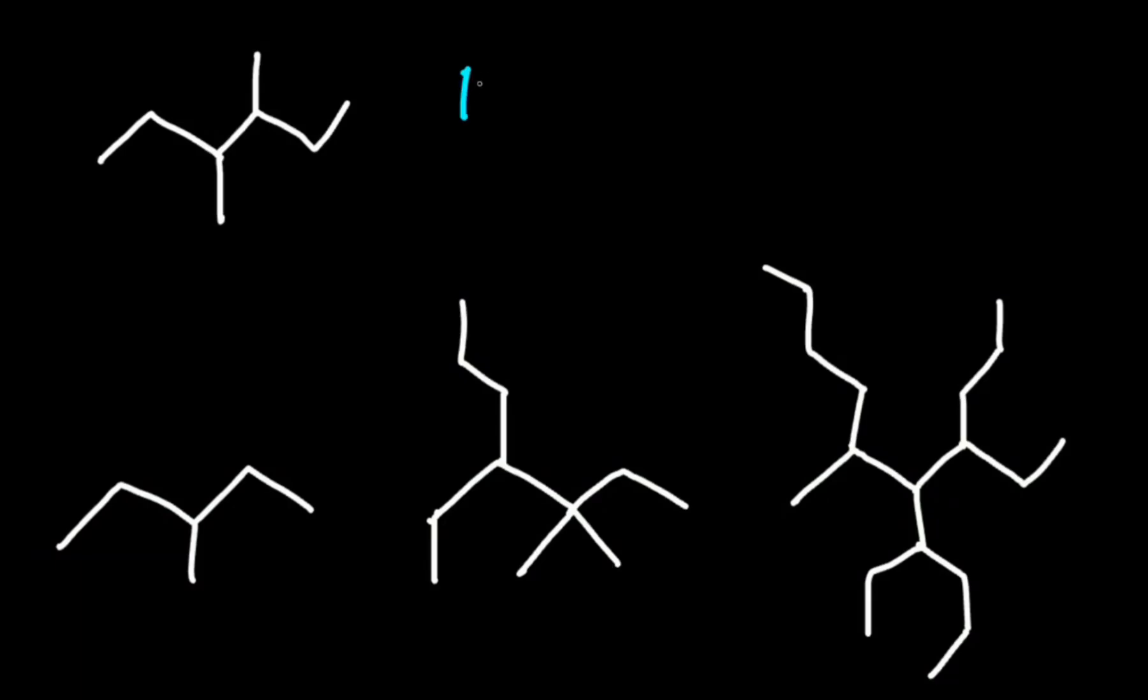The longest chain in organic chemistry refers to a continuous chain of carbon atoms that contains the most carbon atoms without breaking the sequence.